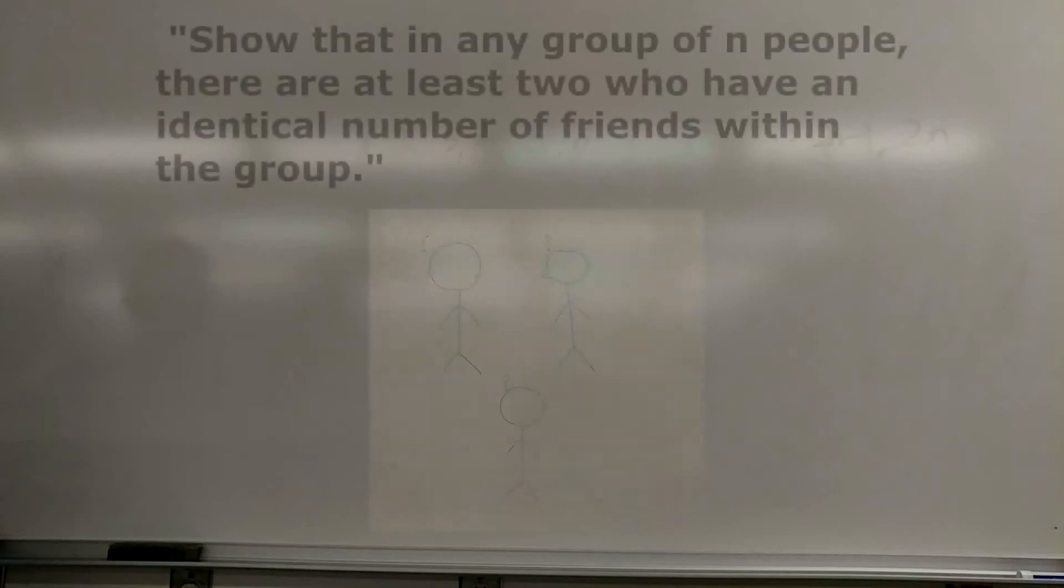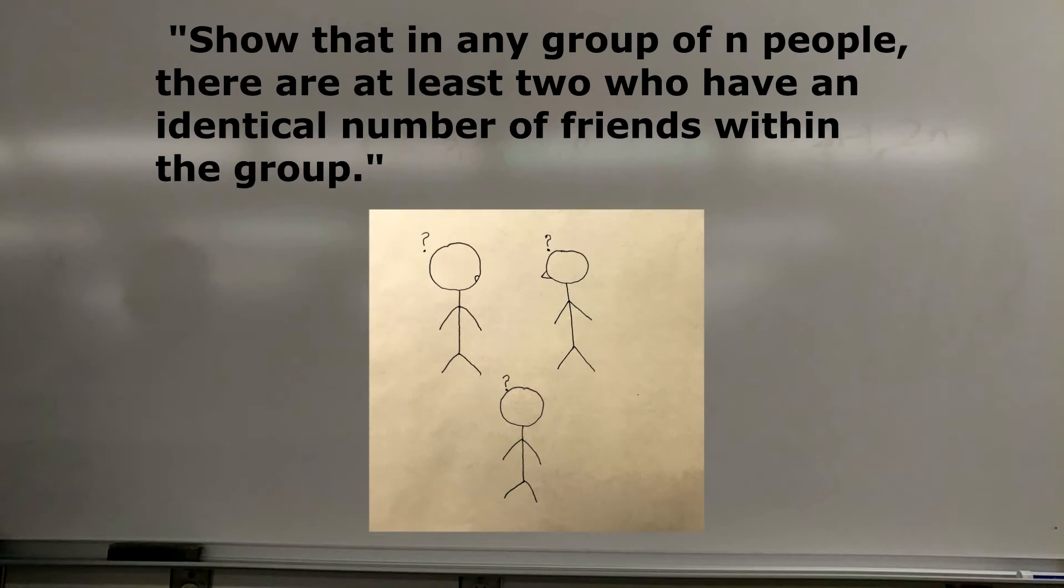Alright, now let's use this principle to solve an interesting problem, which is, in any group of N people, there are two who have an identical number of friends within the group. How do we know that?